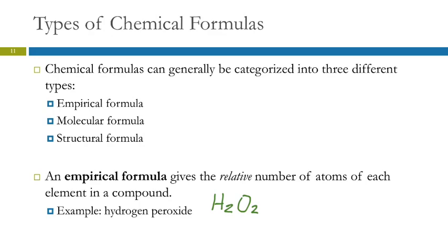The empirical formula gives us the lowest ratio of hydrogens to oxygens. So the lowest ratio would be one hydrogen to one oxygen. You can think of these subscripts as being like ratios or like fractions. A ratio of two to two can be simplified to one to one. Or if you're thinking in terms of fractions, two over two means the same thing as one over one. This is the empirical formula that gives the relative numbers, the lowest ratio, the smallest ratio.